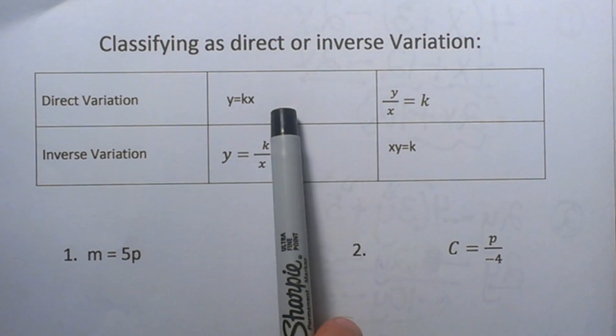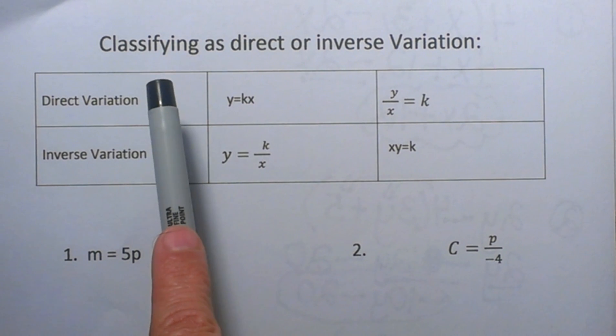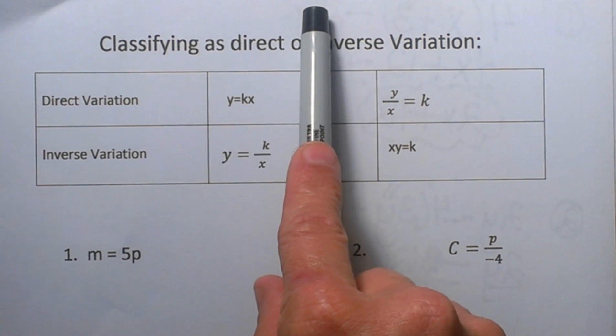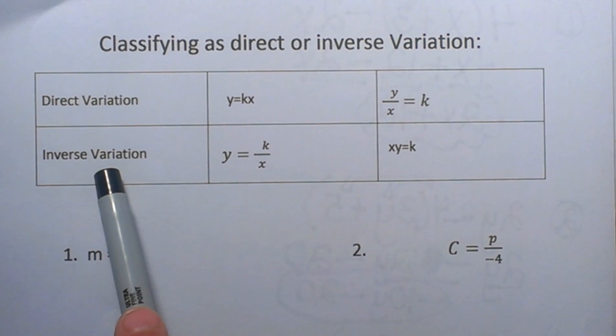Now the one thing you need to know is that direct means as one variable increases so does the other and inverse means as one increases one decreases. So if you are looking at a linear equation, it is decreasing on inverse and it is increasing on direct.